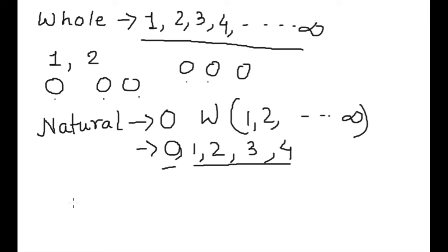So what is the difference between whole number and natural number? The difference is this zero. If zero is there then it is natural number and if it is without zero this is whole number.